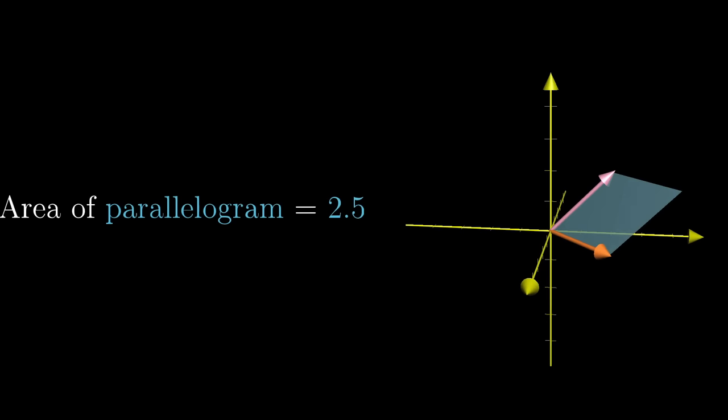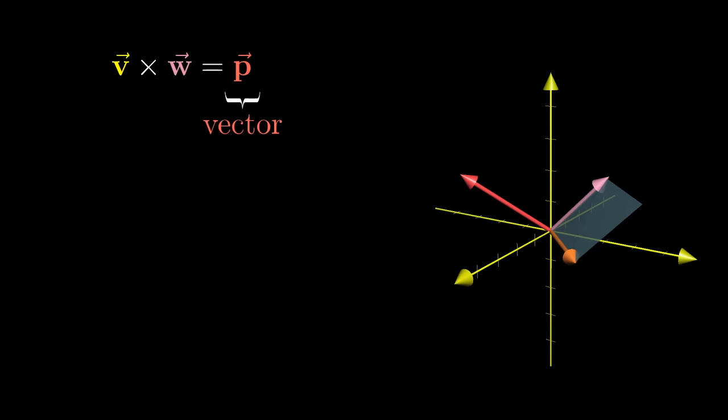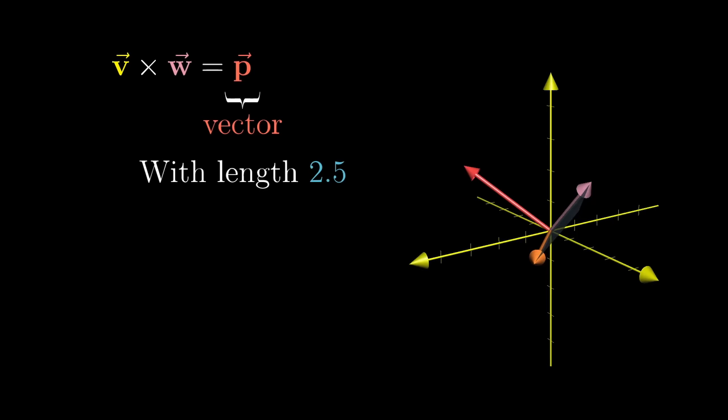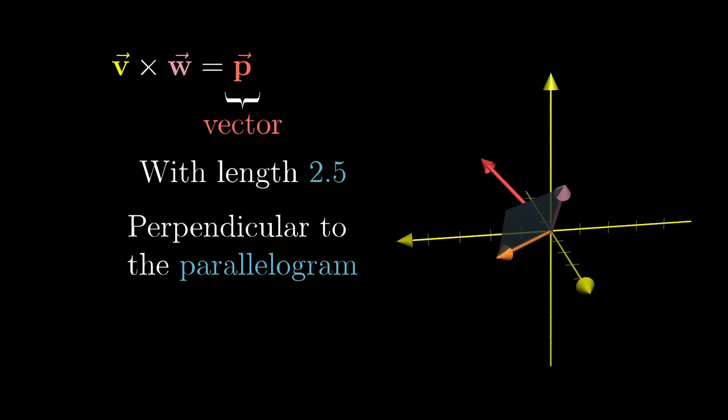But as I said, the cross product is not a number, it's a vector. This new vector's length will be the area of that parallelogram, which in this case is 2.5, and the direction of that new vector is going to be perpendicular to the parallelogram.